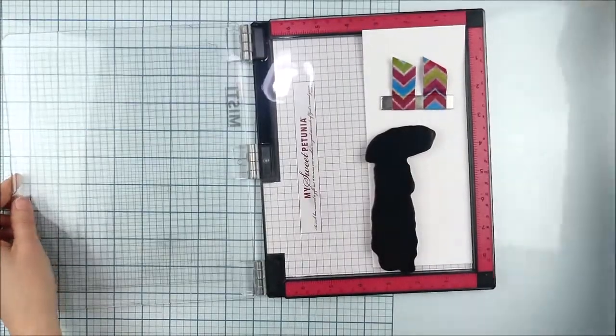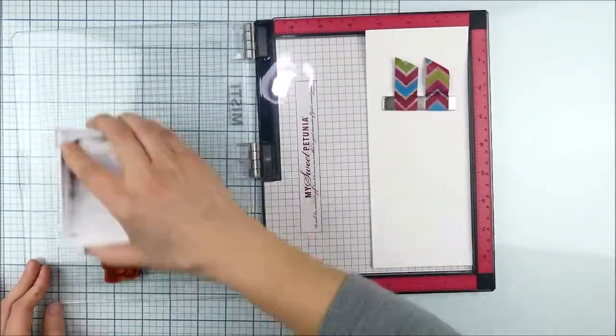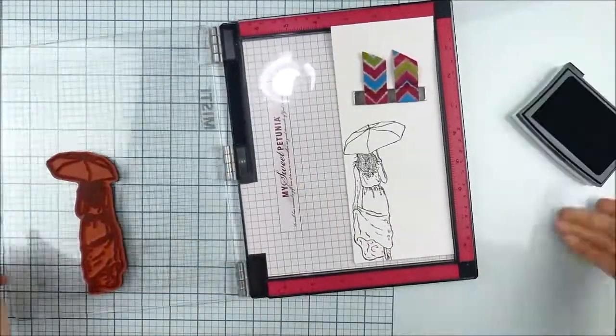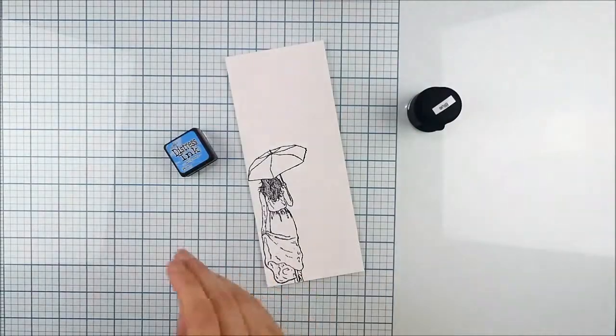three and a half by eight and a half. I have to double check that but it's somewhere roughly around that size. I'm going to go ahead and use my MISTI to stamp that image in place. I'm using some good water-friendly ink, this is Versafine onyx black, and stamping a couple of times to get a clear impression on the watercolor paper.